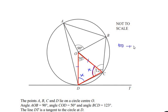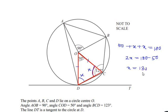Using the angle sum property of the triangle we can write: 50 degrees plus x plus x equals 180 degrees. So we get 2x equals 180 minus 50, or x equals 130 divided by 2, which is 65 degrees. So we get angle C and angle D as 65 degrees, and we can write angle OCD is equal to 65 degrees.